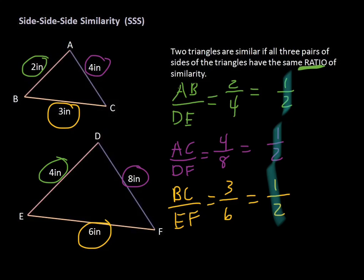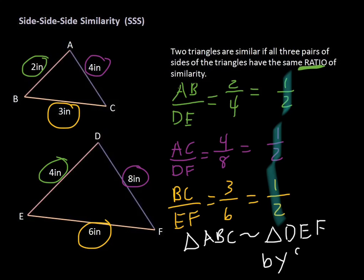So we can say triangle ABC is similar to triangle DEF by the Side-Side-Side similarity property. The similarity symbol is like the congruence symbol except without the equal sign.